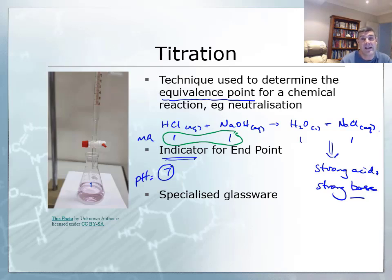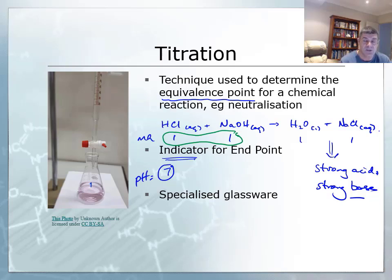But not all acid-base reactions will have an equivalence point at 7. There are some different examples of those, and we're going to have to look at how that might affect our decision on which indicator we use.